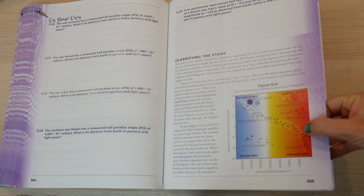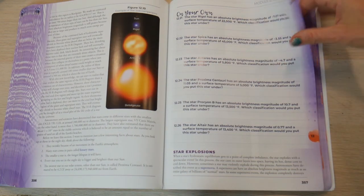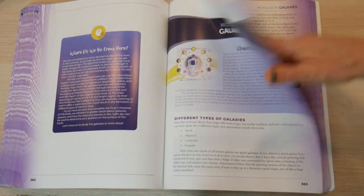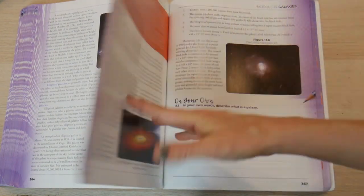Determining the distance of the star. Here's a little classification of the stars. Beautiful pictures once again. Section on galaxies. And these are going to be all the different types of galaxies.